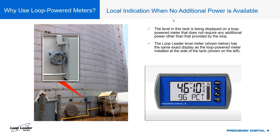The big advantage is that you get indication where no additional power is available. On the left, there's a loop power meter in a field-mounting enclosure that was added after the fact — they just wanted to see the tank level from the side of the tank. The 4-20 milliamp wire came in through the conduit, they broke that existing wire, added the loop power meter, and they were done. No additional power was needed in that cabinet.